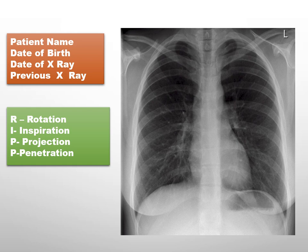The second step is to evaluate the overall quality and positioning of the x-ray, represented by the acronym RIPP, which stands for rotation, inspiration, projection, and penetration.